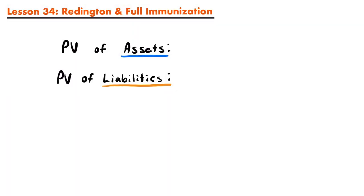So last time I introduced you to the first method of managing assets and liabilities known as dedication or exact matching. Similar to exact matching, immunization is also a method for managing assets and liabilities. But more specifically, immunization focuses on protecting the value of assets and liabilities from changes in interest rates.